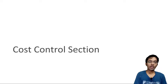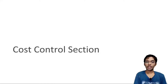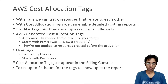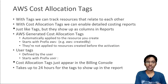S3 cost savings is going to be the longest lecture in this section. We will begin with cost allocation tags. As we know, we can tag resources, and the reason we do that is so that we can compare which ones relate to one another.